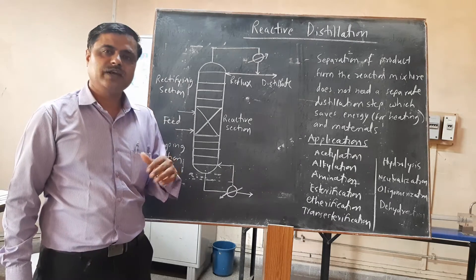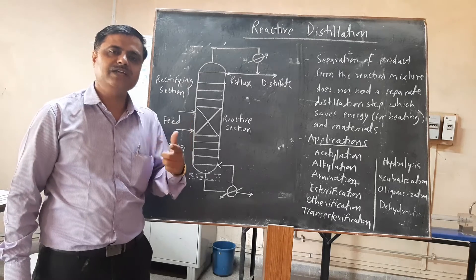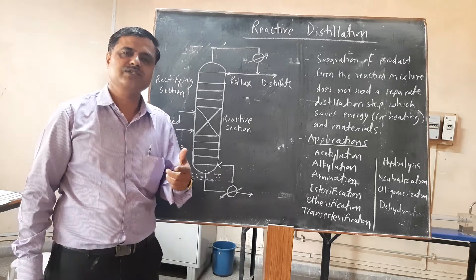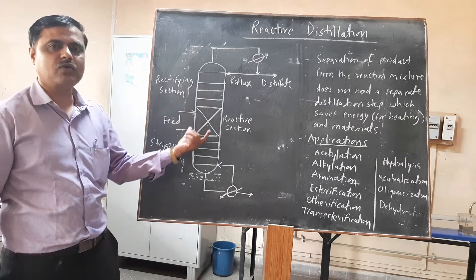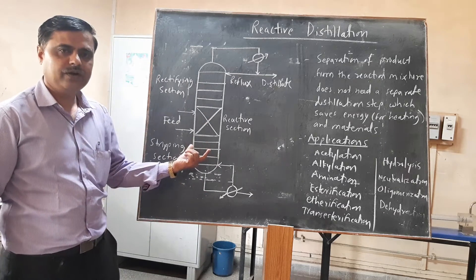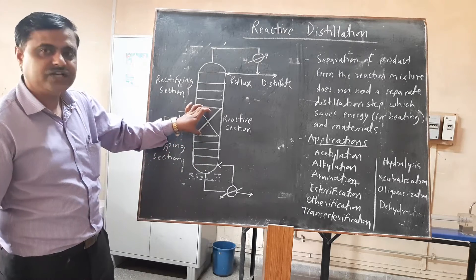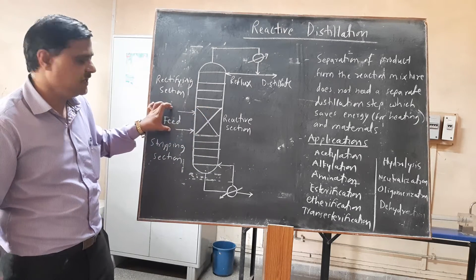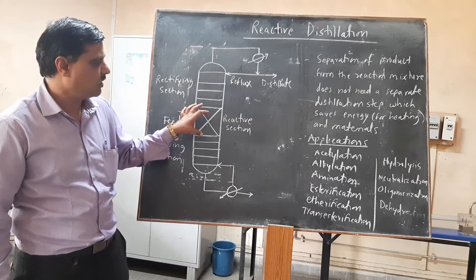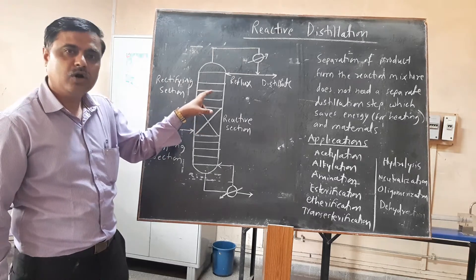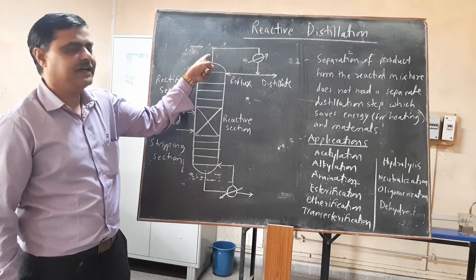In reactive distillation, the reaction is going to take place in a single vessel as well as the separation is going to take place in the same vessel itself. This is the column — you can see it here. The reactive section is provided in the column. The feed is entered here and the reaction takes place. The more volatile component is evaporated at the top.